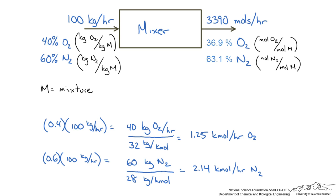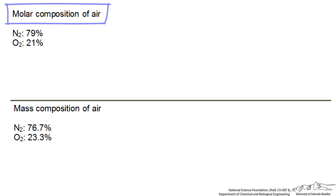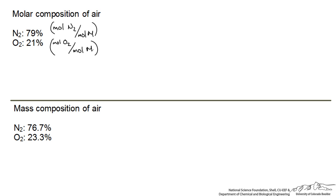Let's do another example to demonstrate how we would calculate it depending on whether we are given a mass composition or a molar composition. We are going to use a simplified example looking at air, accounting for only nitrogen and oxygen making up 100% of the composition. Given the molar composition of air, and we want to calculate an average molecular weight — our end goal is to get an average molecular weight of our mixture, say grams of the mixture per moles of the mixture.